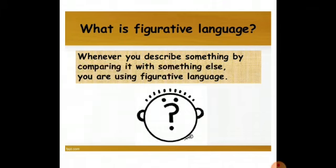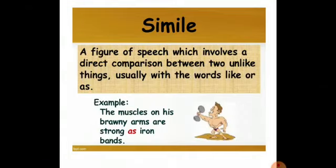What is figurative language? Whenever you describe something by comparing it with something else, you are using figurative language. You will find different types of figurative language that you can use in your writing in order to make variety in your sentence structure and make your writing more rich. First of all, simile — a figure of speech which involves a direct comparison between two unlike things, usually with the words 'like' or 'as'.